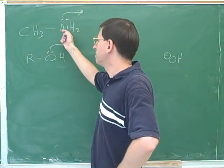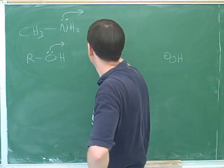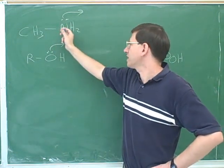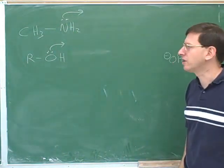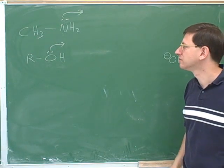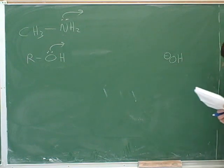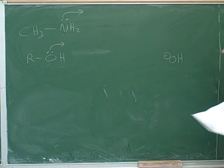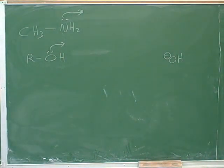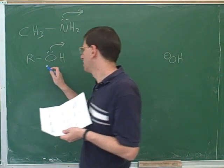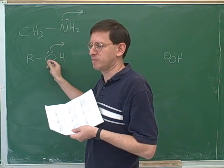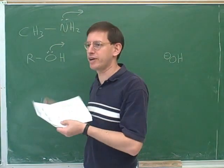Amines are better bases than alcohols. They're not strong bases like hydroxide, but they're a better base than alcohol. Can you think of a reason why this amine would be a better base than alcohol? Because it has a lone pair. Of course, the alcohol has a lone pair too. Because it's more electronegative. Who's more electronegative? Actually, the oxygen is, isn't it? And does that make the oxygen more or less willing to donate electrons? Less willing to donate electrons. Which makes it a good base or a poor base? Poor base. Okay, so you were on the right track there.